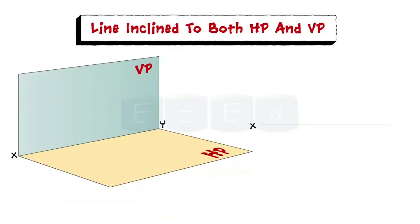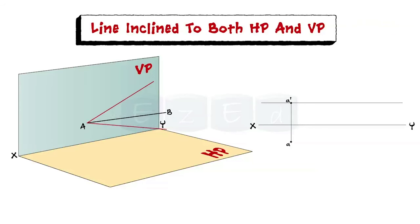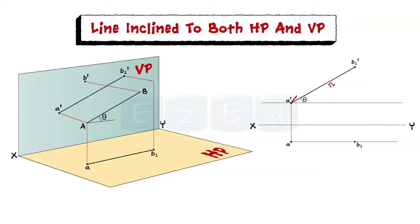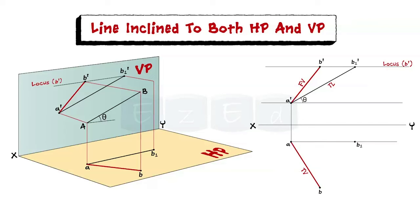In the given first quadrant, consider line AB which is inclined to HP and also inclined to VP. The position of this line can be obtained by rotating it into two simple positions: line parallel to VP and line parallel to HP. First, consider line AB is parallel to VP and is inclined to HP by angle theta. Projecting line AB gives its front view as A'B1' and its top view as AB1. Now keeping point A fixed, rotate line AB by angle phi with respect to VP. The front view of point B, that is B', will lie on the locus of point B', and we get the top view of line AB as shown. These are the required front view and top view of the given inclined line AB, appearing inclined at angles alpha and beta respectively to line XY.